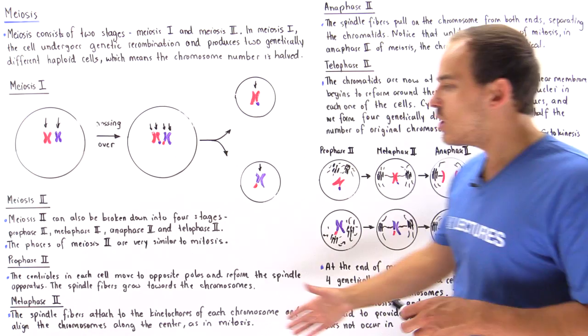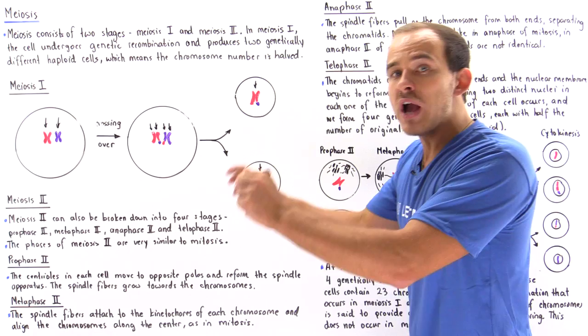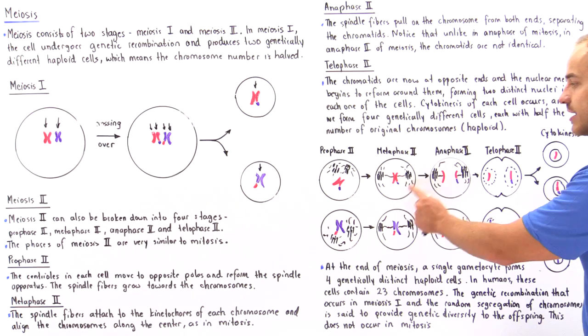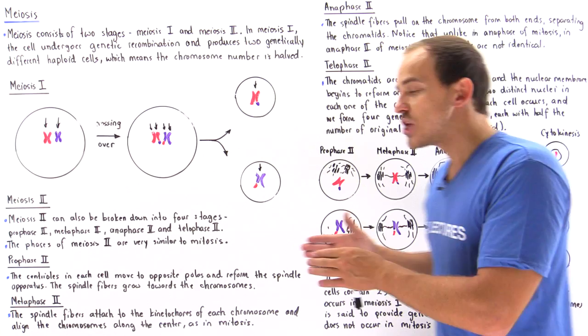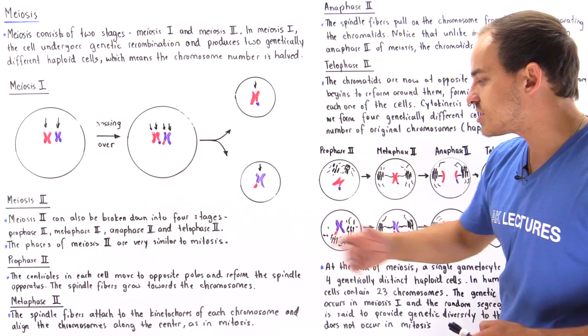In metaphase 2, the spindle fibers formed from our centrioles, which are now found on opposite ends of the cell, grab the chromosome at the kinetochore region on the centromere. Once they grab it, they align the chromosomes at the center of the cell at our equator. So in metaphase 2, the spindle fibers attach to the kinetochores of each chromosome and align the chromosomes along the center of the cell.